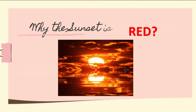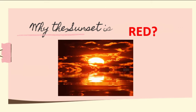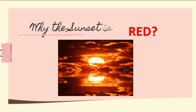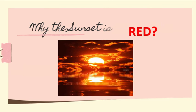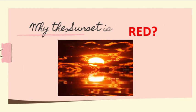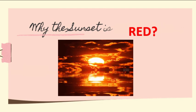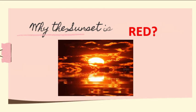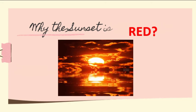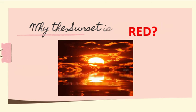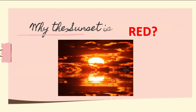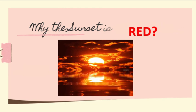Why is the sunset red? During sunset, sunlight travels a long path through the atmosphere to reach our eyes. The blue light has been mostly scattered away, leaving mostly red and yellow light remaining. The result is that sunlight takes on an orange or red cast, which we can see reflected from clouds and other objects as a colorful sunset.